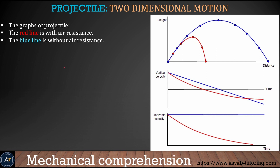The next thing we learn is two-dimensional motion with a graph. If you kick the ball — in ideal conditions it goes up to the maximum point and comes down. But if there is air resistance it will look different. The vertical velocity of this object is shown here — the red line represents with air resistance and the blue line represents without resistance. Same for the horizontal velocity: without any resistance it is straight, but with air resistance it looks like that.